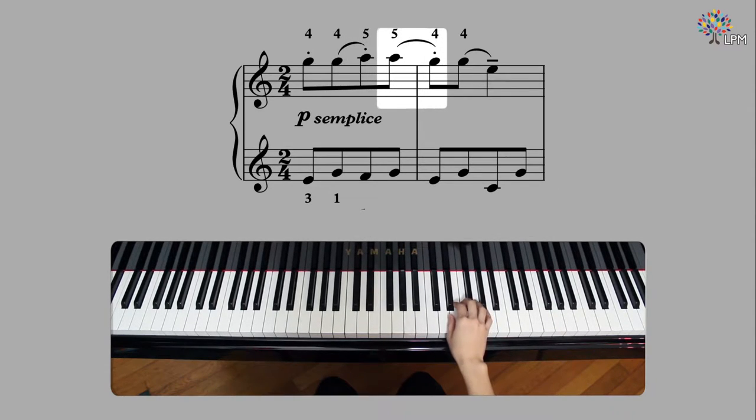Here we have another two note slur with the second note as a staccato under legato. Then again. But this time, the second note of the two note slur has a tenuto, which is a full valley quarter note with a slight emphasis, a little nudge on the note.